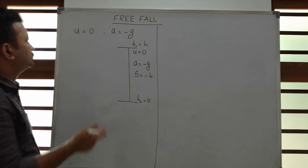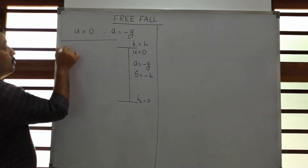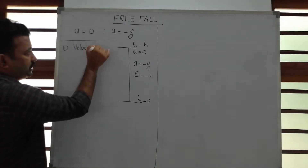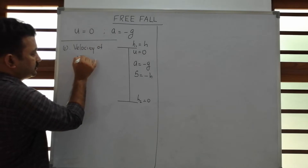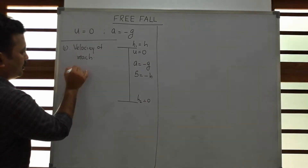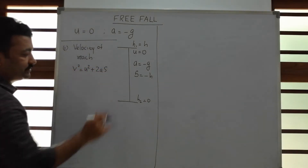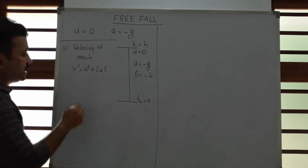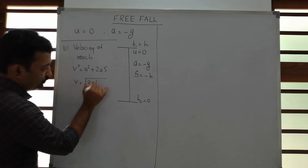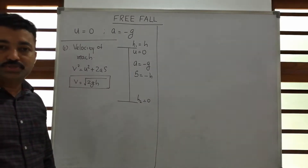We need to find out two more things for this particle. First, by what velocity the particle will reach the ground — the velocity of reach. This can be found using v² = u² + 2as, giving the expression v = √(2gh).